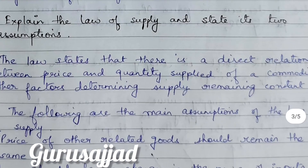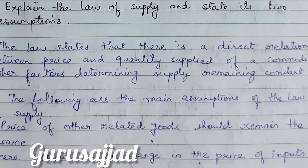Another important question is the law of supply. If you have followed our previous videos, we explained the law of demand and the law of variable proportion, and now it comes to the law of supply. You have to remember all these laws because they directly give you marks in the exam. The law states that there is a direct relationship between price and quantity supplied of a commodity — as price increases, supply increases. But the other factors determining supply must remain constant for this law to apply.